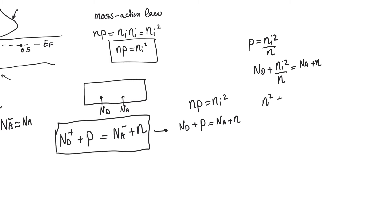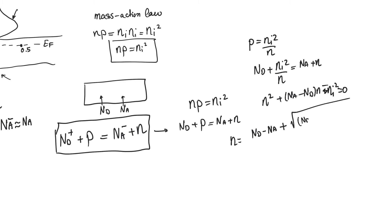This gives us a quadratic equation: N² + (Na − Nd)N − Ni² = 0. This can be solved to find an exact expression for N: N = [(Nd − Na) + √((Nd − Na)² + 4Ni²)] / 2. We can similarly find an exact expression for P.